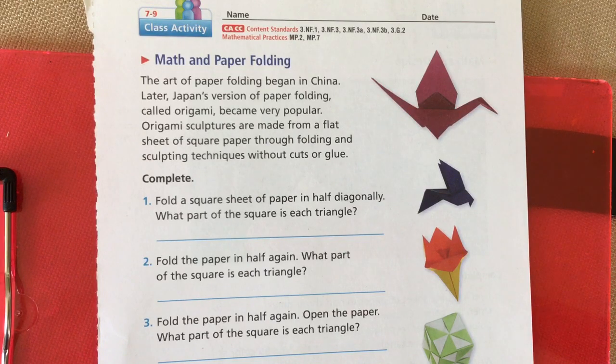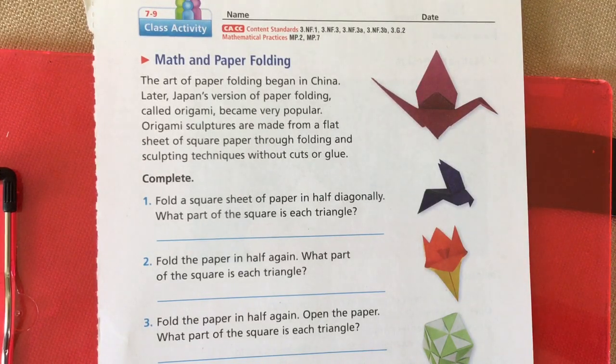So what you're going to need is square paper. All four sides have to be equal.